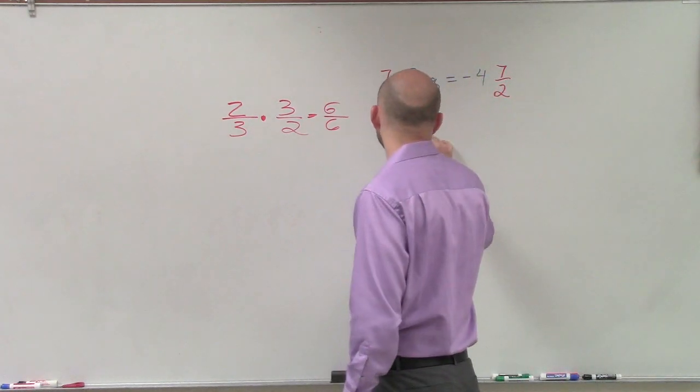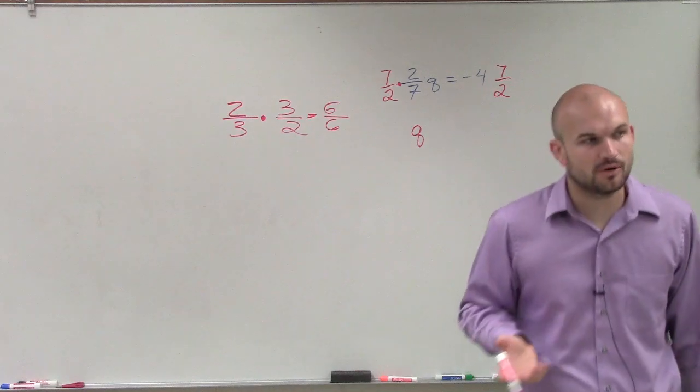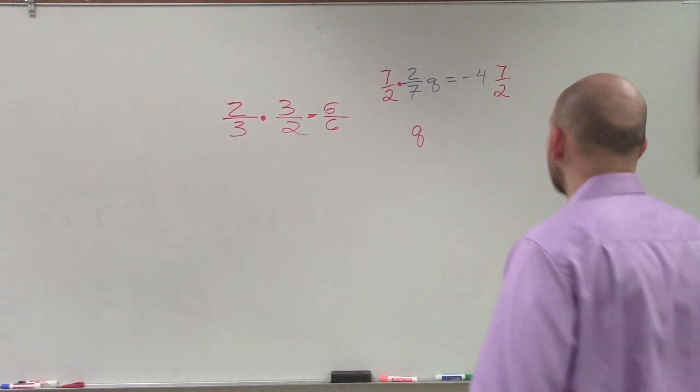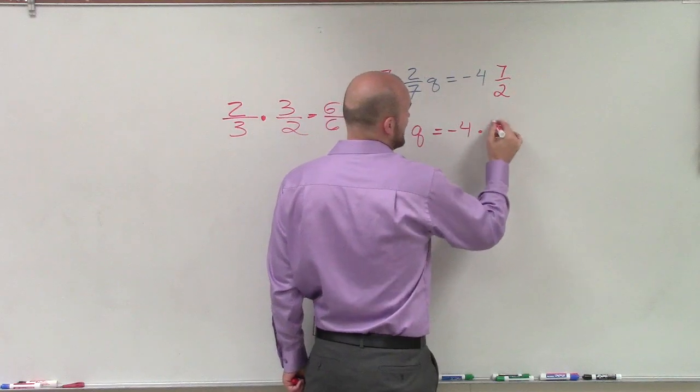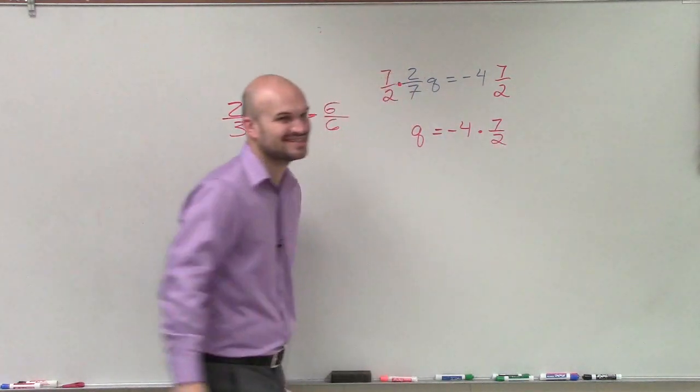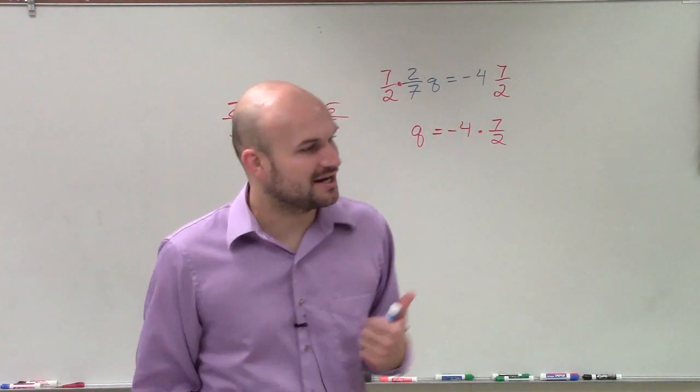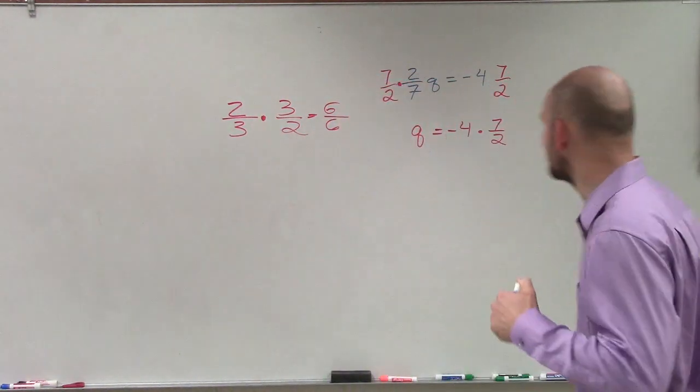So therefore, I've eliminated or I've isolated what we call our variable. Now I have q by itself equals negative 4 times 7 halves. So I showed you guys in another video how to multiply a whole number times a fraction.